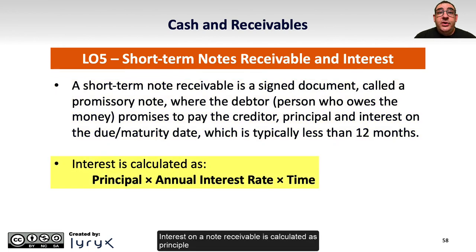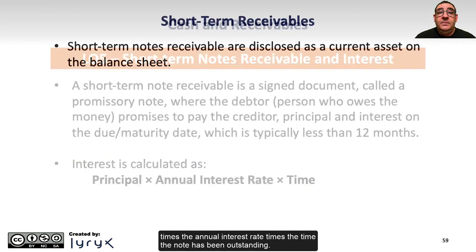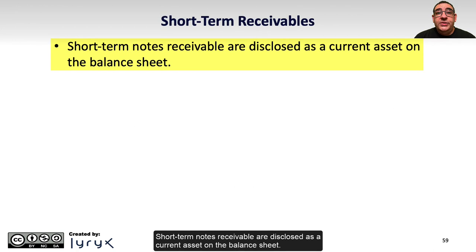Interest on a note receivable is calculated as principal times the annual interest rate times the time the note has been outstanding. Short-term notes receivable are disclosed as a current asset on the balance sheet.